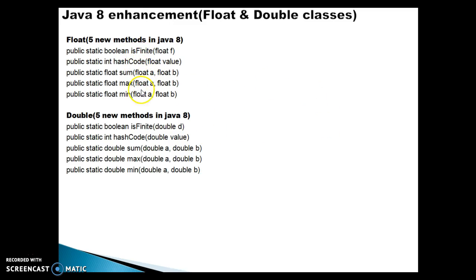The method names are similar in both Float and Double classes. All these methods are static, so you can call them directly by the class name. The first method is called isFinite — you pass a float value, and in the Double version you pass a double value. It returns a boolean: true if the value is a finite number, false if it is infinite. The same method works in similar fashion in the Double class.